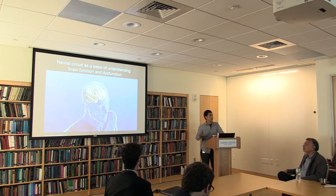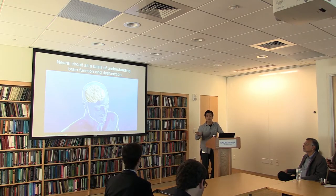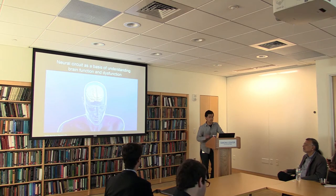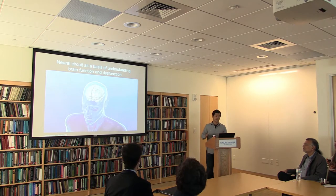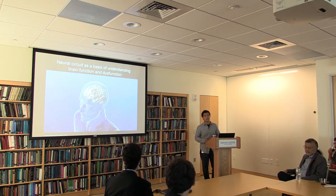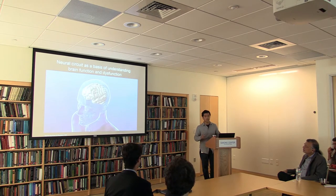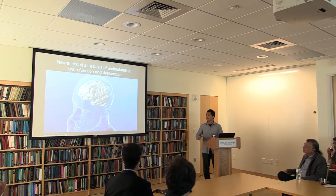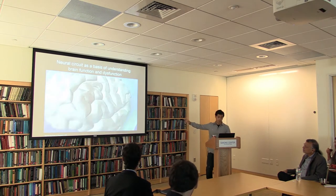Our brain is staggeringly complex. It consists of 80 billion neurons with many distinct types. Furthermore, each neuron makes thousands of different connections with other neurons, forming an intricate neural network.